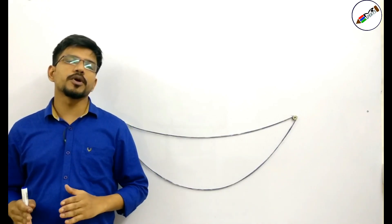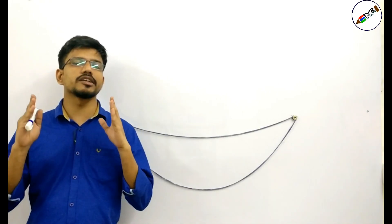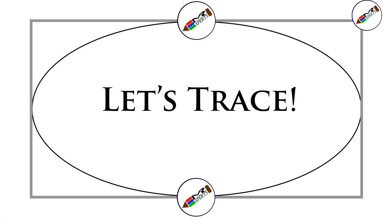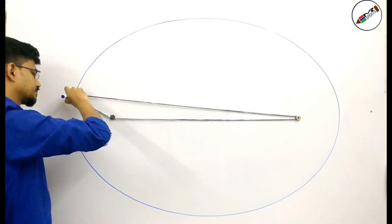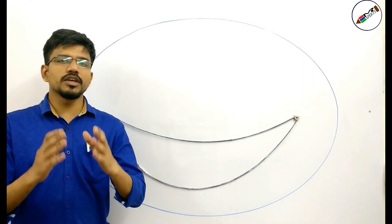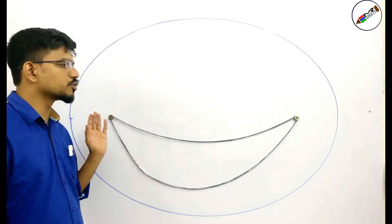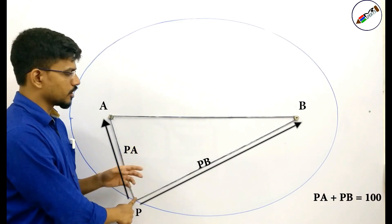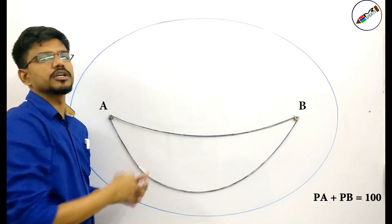Let us trace all such points P such that the sum of their distances from point A and point B will always be a constant — that is 100 centimetres. As you can see, we have drawn all such points P which have the sum of their distances from the two fixed points as a constant. If you consider this point P, PA plus PB is always equal to 100, and for any other point, PA plus PB is again equal to 100.